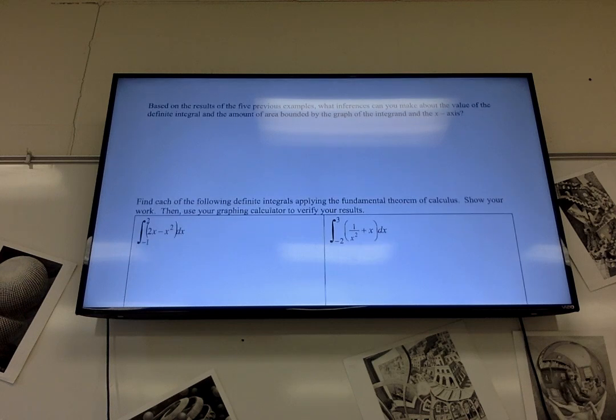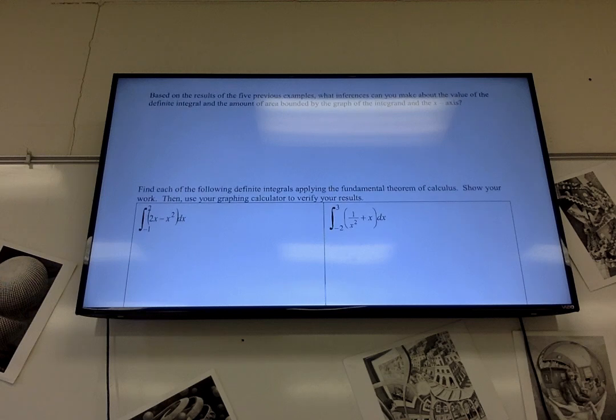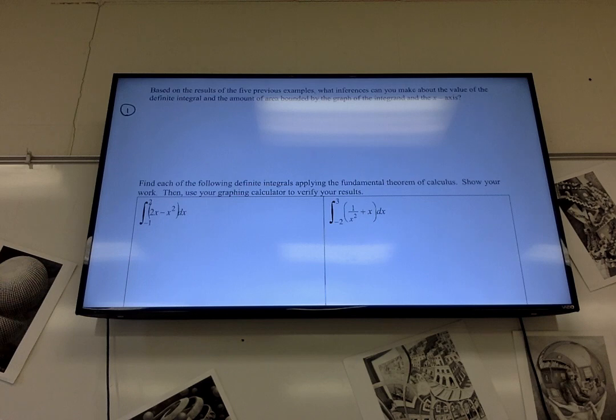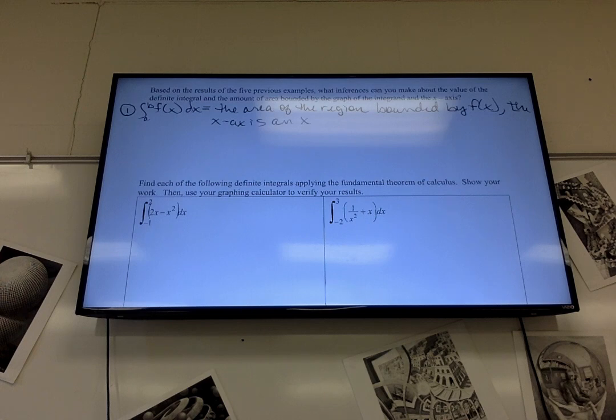So based on all that stuff, there are some rules. Now this we should already know, but the antiderivative, or the definite integral from a to b of f of x dx is the area of the region bounded, I know, right, by f of x, the x-axis, and x equals a, and x equals b. So basically, between the graph, the x-axis, and my beginning and ending point.